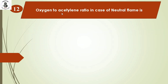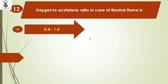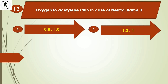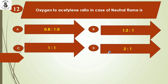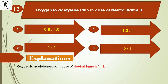Oxygen to acetylene ratio in case of neutral flame is: Option A: 0.8:1. Option B: 1.2:1. Option C: 1:1. Option D: 2:1. The oxygen to acetylene ratio in case of a neutral flame is 1:1, or you can say 50 percent oxygen and 50 percent acetylene. So the answer is option C.